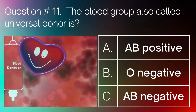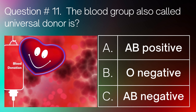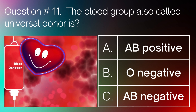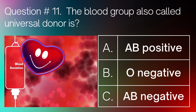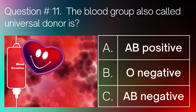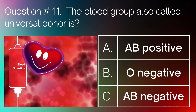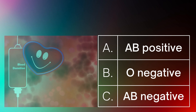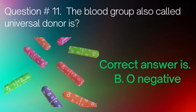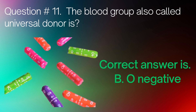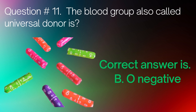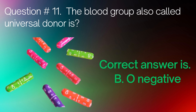Question number 11. The blood group also called universal donor is: Option A. AB positive. Option B. O negative. Option C. AB negative. Correct answer is Option B. O negative.